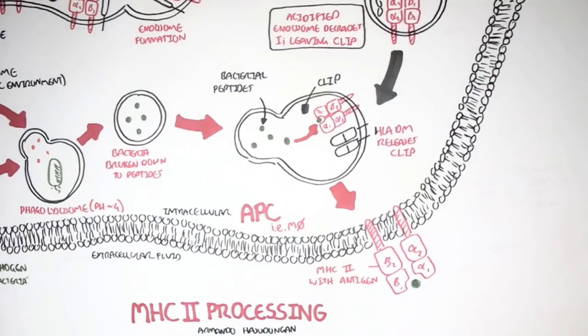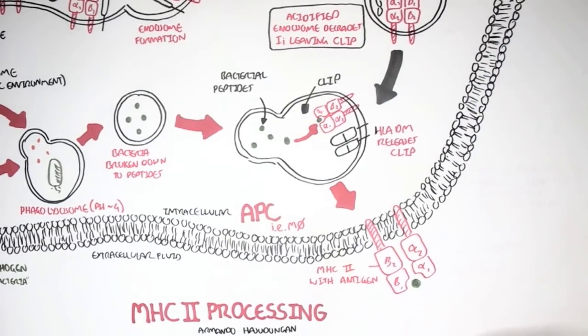When the naive CD4 T cell becomes activated, it will become a T helper cell. This is very important in promoting the immune response. So let's see what sort of interaction occurs between the antigen-presenting cell and the naive CD4 T cell.